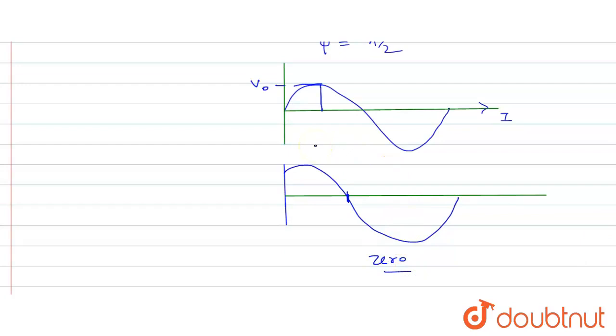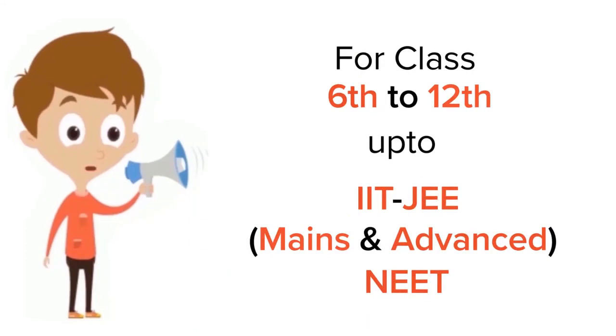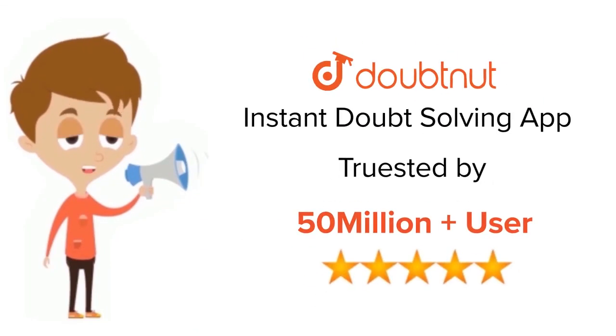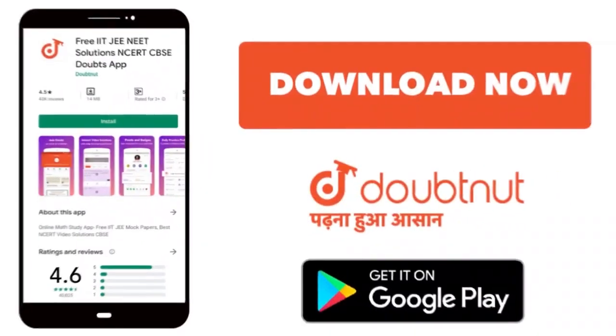At peak current, the voltage will be at zero. Thank you. For class 6 to 12, IIT-JEE and NEET level, trusted by more than 5 crore students, download Doubtnet today.